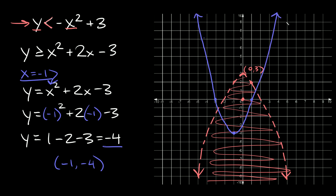Now that the parabola is graphed, the next thing is to figure out if this should be a solid or dashed line. Looking at the original inequality, it's a greater than or equal to symbol — we have the equal to attached — so that means it should be a solid line. We're going to leave it just like that.